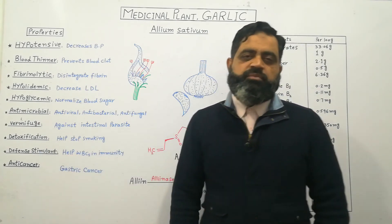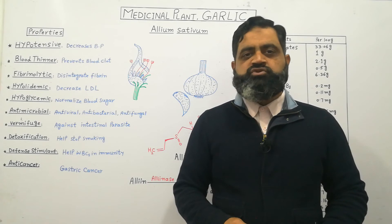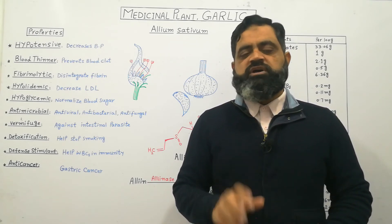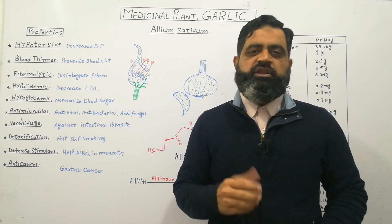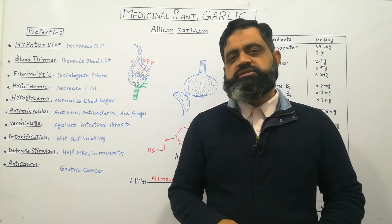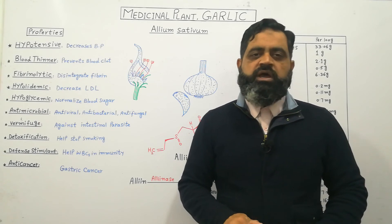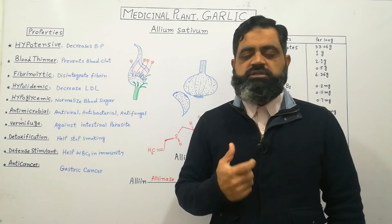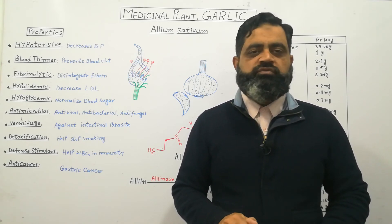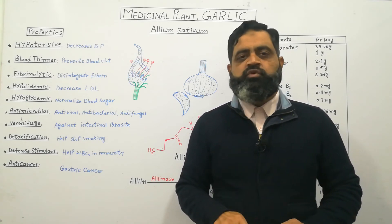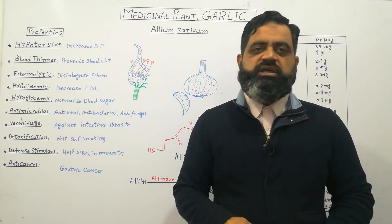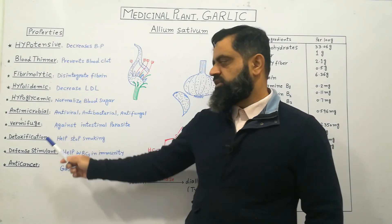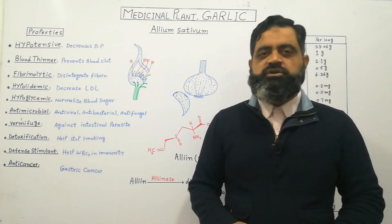Detoxification is another property of garlic. If somebody is smoking, it helps to stop smoking and also detoxify the body from the harmful effects of drugs like nicotine, caffeine, alkaloids, heroin, and some other chemicals. If a person is smoking, there are many chemicals, tar, and anticancerous chemicals in the lungs which can be removed with the help of garlic. Garlic helps to clean the lungs and blood in the body, and in this way helps to detoxify and also helps a person to stop smoking.